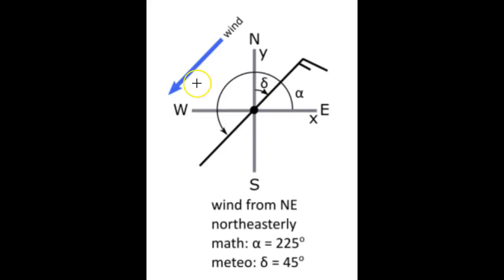It turns out that the math angle equals two hundred and seventy degrees minus the meteorology angle. And also, therefore, the meteorology angle equals two hundred and seventy degrees minus the math angle.